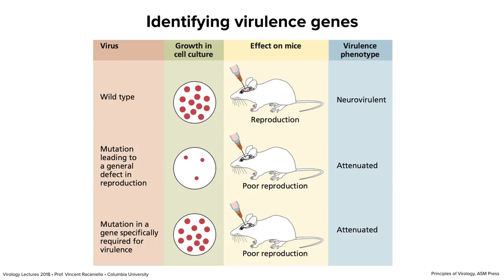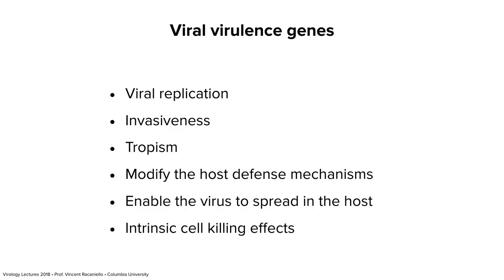Genes specifically required for virulence have been found in many different viruses. The types we find include: genes involved in viral replication specific to the animal; genes involved in invasiveness — the ability to go from the periphery to the brain; tropism — what tissues the virus grows in; gene products that modify host defense mechanisms; genes that enable spread in the host; and genes with intrinsic cell-killing effects.